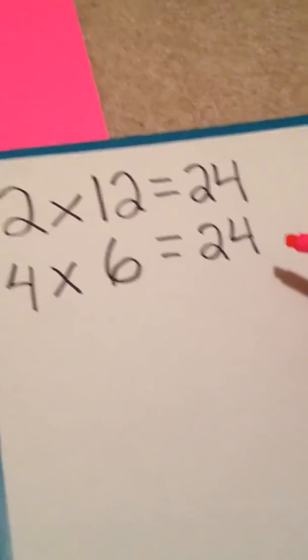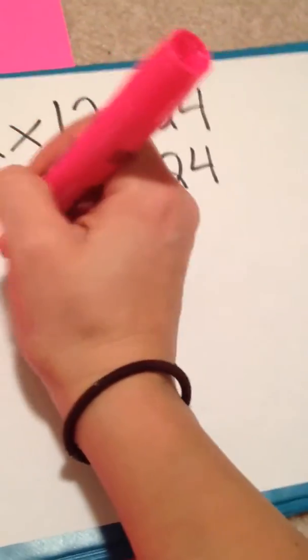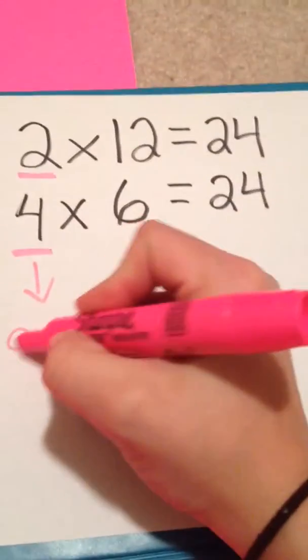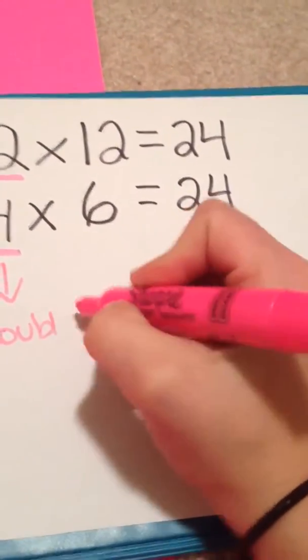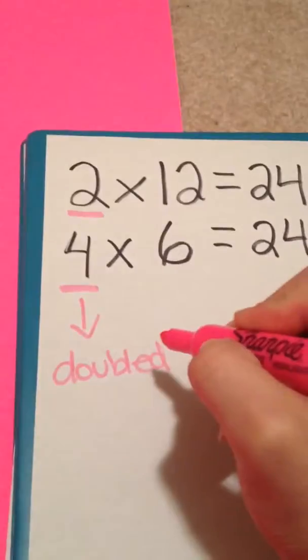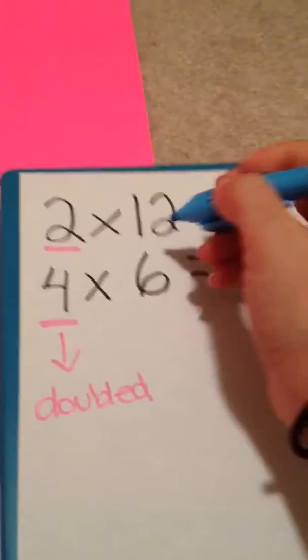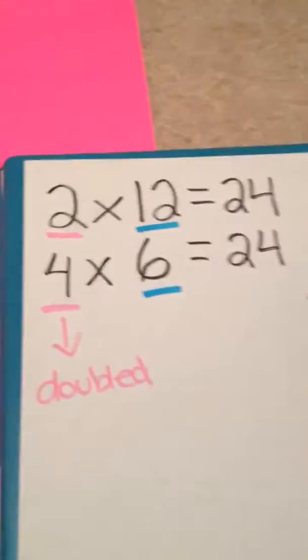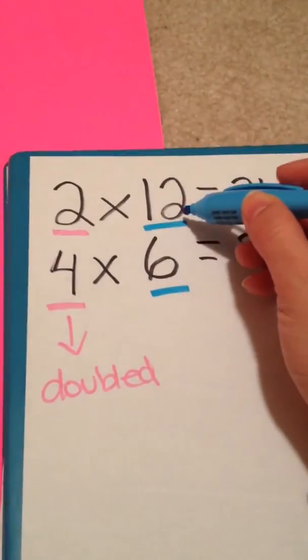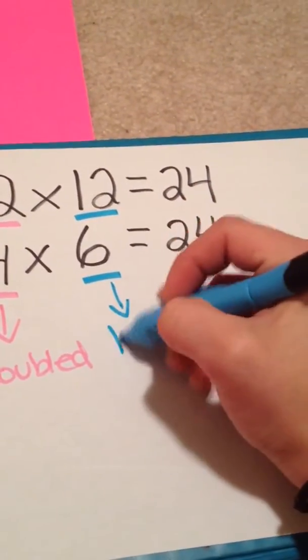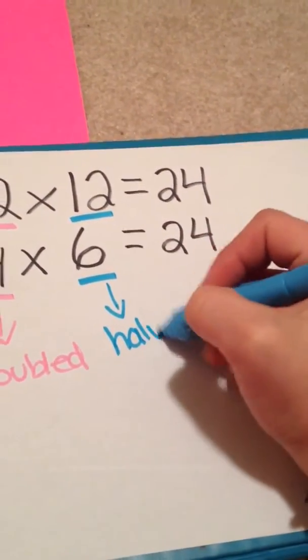Take a look at our 2 equations. You can see that when our groups doubled, so 2 doubled is 4, in this column we had the groups that doubled. Take a look at what happened in the other column. We went from having 12 candies to only 6 candies. Half of 12 is 6, so this side halved.